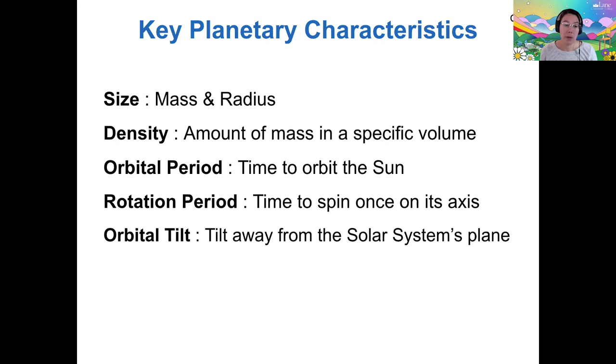Like we mentioned, the Earth's orbital tilt is 23.5 degrees, and that's why the ecliptic, the path that the sun takes on the celestial sphere, is also tilted by 23.5 degrees from our celestial equator. So all of these planetary characteristics, we'll use these to compare and contrast the planets, and using the patterns that emerge, we try to piece together a history of the solar system.